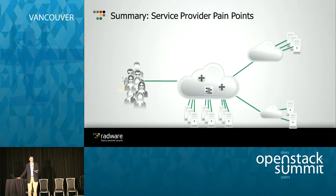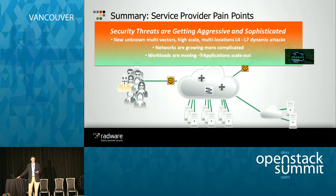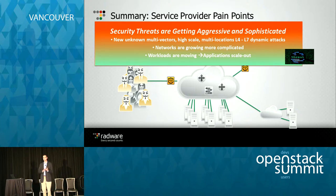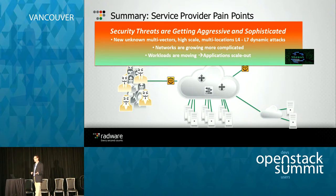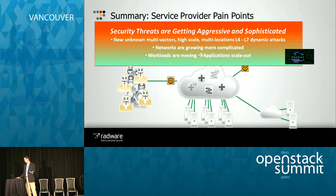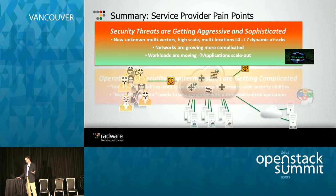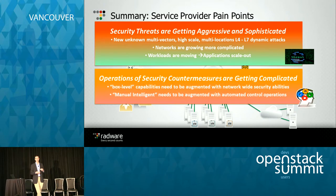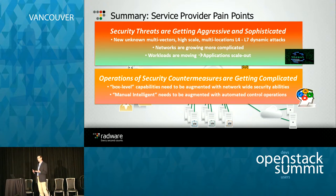Several key themes emerge. Security threats are becoming much more aggressive and sophisticated, with multi-vector attacks going after layers four through seven. Networks are getting more complicated as enterprise customers now have both on-premise and cloud devices to protect. We're also seeing a rise in encrypted attacks, where carriers and enterprises need to look at not only unencrypted traffic but also encrypted traffic. The countermeasures are getting much more complicated.